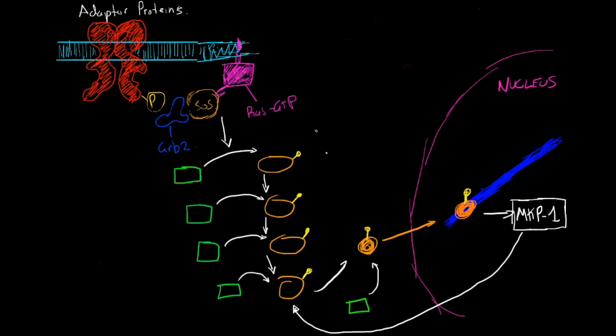I want to look at the RAS-MAP pathway and all the different constituents involved in turning on a transcription factor that is usually involved in cell proliferation. Cell proliferation is just cell division, and this can, if mutated, contribute to a lot of different types of cancers.